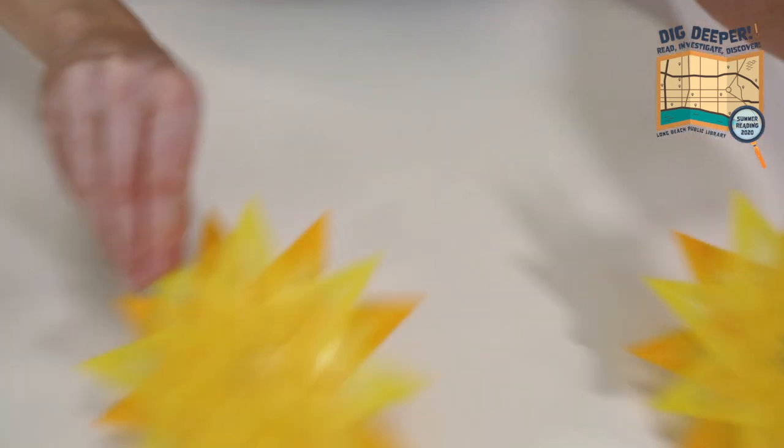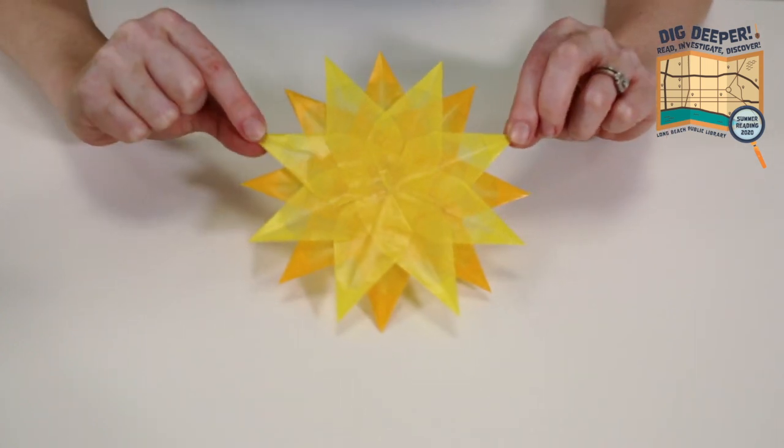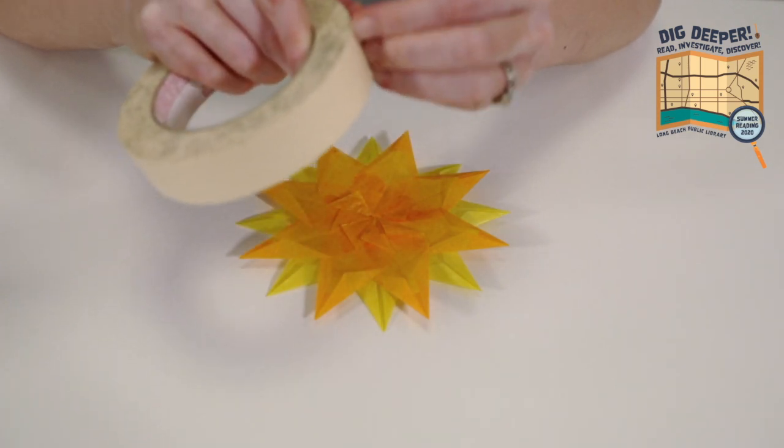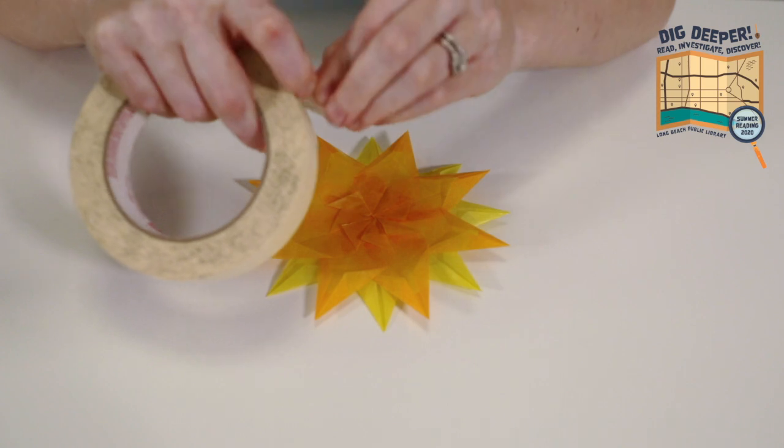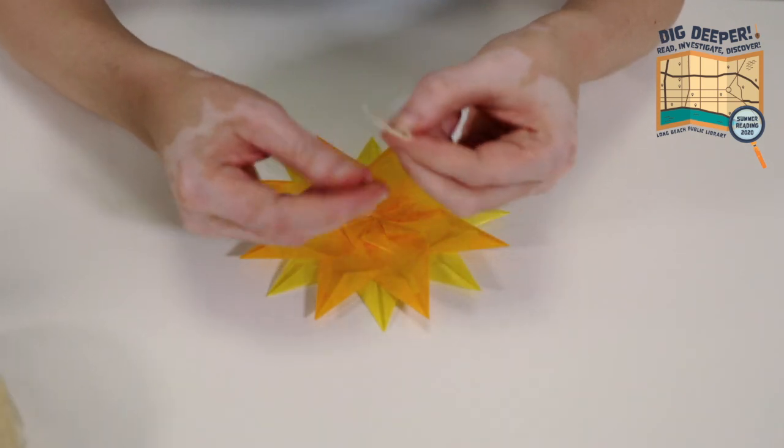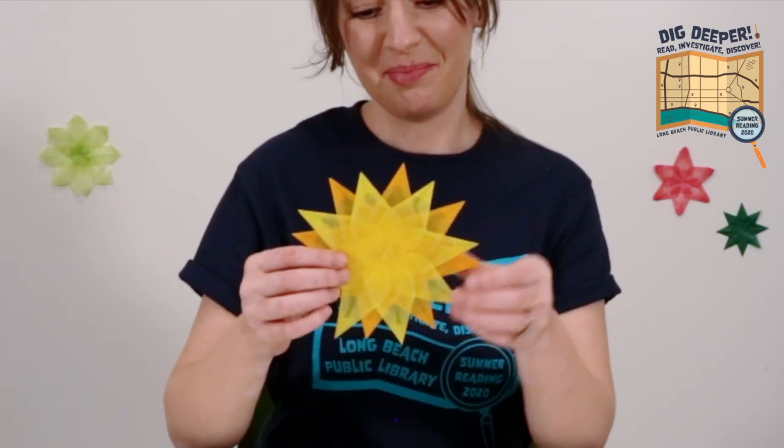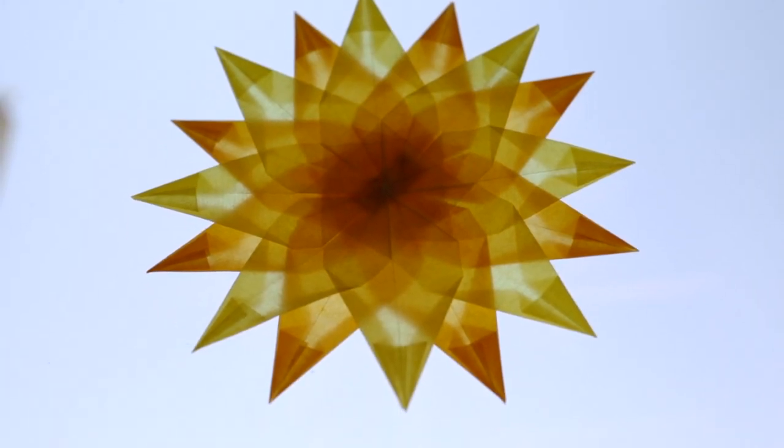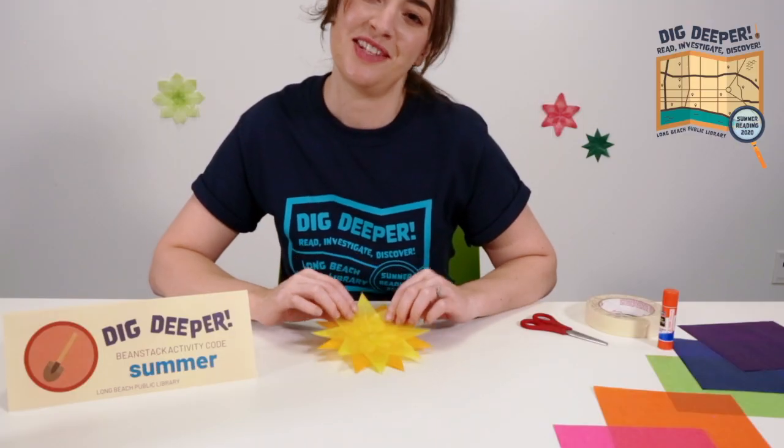When the glue dries, it looks a little bit more like this. And next you can put a little piece of tape. You probably want to use clear tape, not masking tape for this. But this is what I had ready. And you're just going to fold a little piece of tape there, put it on the back of your window star. And there you have it, your complete window star. Go find a window in your house that's facing the sun and just stick it right in there. And I hope it brightens your home and makes you a little more cheerful this summer.